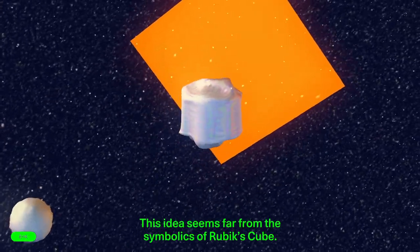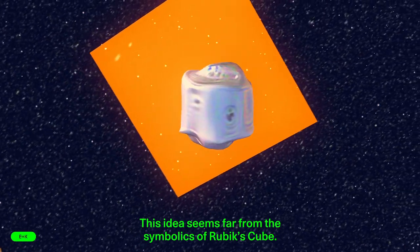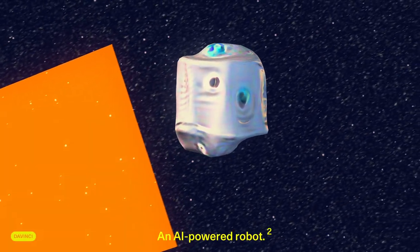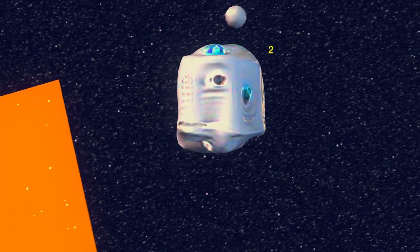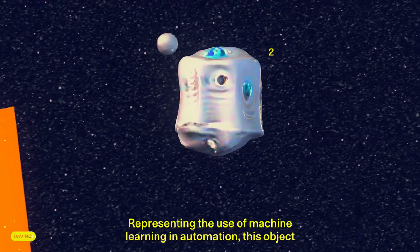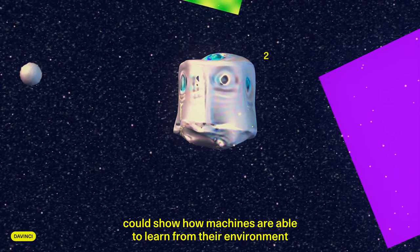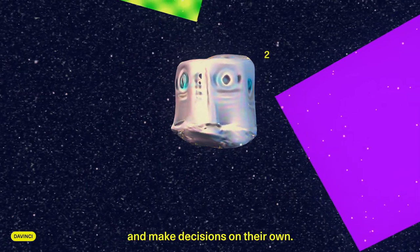This idea seems far from the symbolics of Rubik's Cube. Can you suggest a more accurate representation? An AI-powered robot. Why? Representing the use of machine learning in automation, this object could show how machines are able to learn from their environment and make decisions on their own.